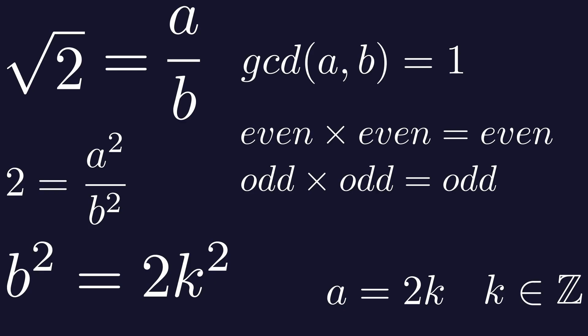That is a contradiction. At the beginning, we said that a and b do not share any divisors greater than 1. If a is even and b is even, they share a common divisor of 2, so they are not relatively prime. It means that the square root of 2 cannot be rational. So the square root of 2 is irrational.